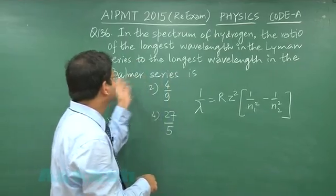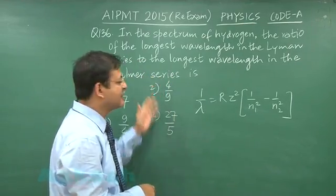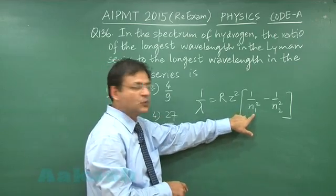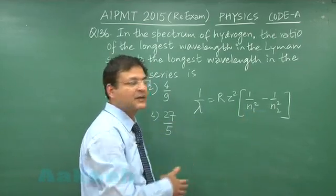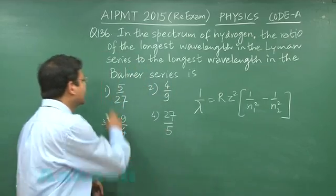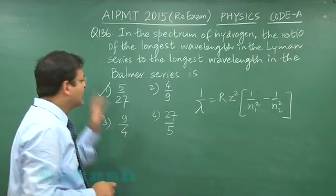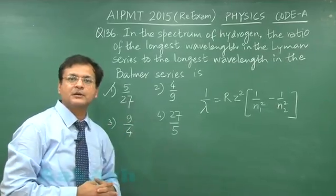But if you are trying to calculate the same thing for Balmer series longest wavelength, then n1 will be 2 and n2 will be 3. And then if you calculate the ratio of these two you will be getting the value 5 by 27 and that will be the answer to question number 136.